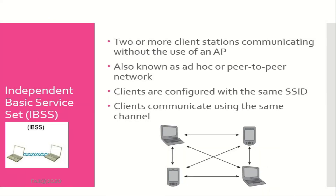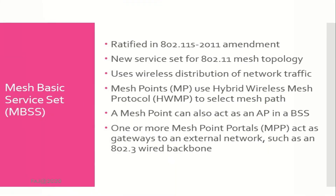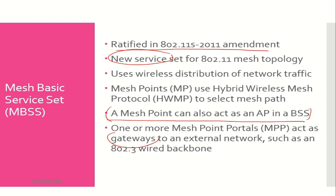Independent Basic Service Set (IBSS) consists of two or more client stations communicating without the use of an AP, also known as an ad hoc or peer-to-peer network. Clients are configured with the same SSID and communicate using the same channel. Mesh Basic Service Set (MBSS) was ratified in the 802.11 2011 amendment as a new service set for 802.11 mesh topology. A mesh point can also act as an AP in a BSS, and one or more mesh point portals act as gateways to an external network such as an 802.3 wired backbone.